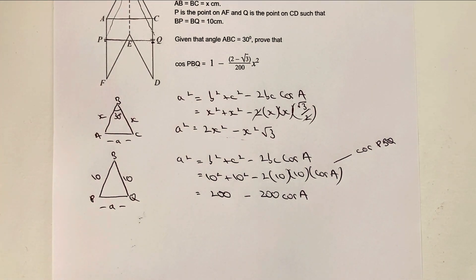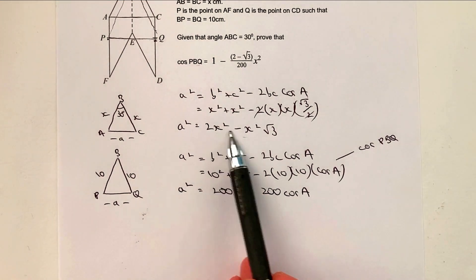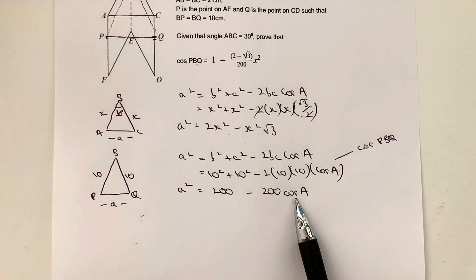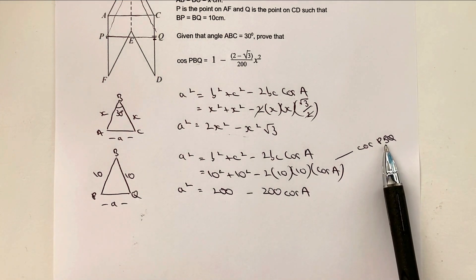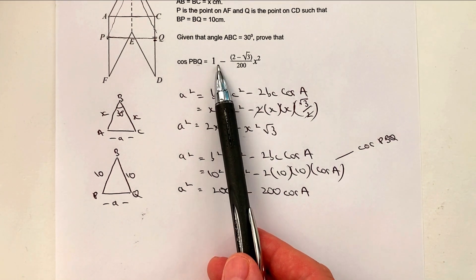Okay, now, as I mentioned before, both of these are equal to a squared. So both of these expressions are equal to each other. So I can write that down. And then really, it's just a case of manipulating it until we get cosine A, which you'll remember is the same as cosine PBQ as the subject of the formula.